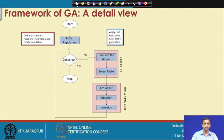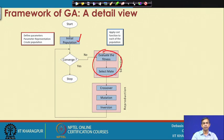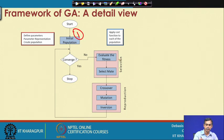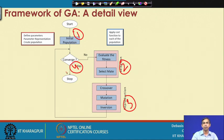In genetic algorithm, the key tasks are: how to create a new population, how to do selection by means of evaluation and mating pool generation, how to perform reproduction — that is, crossover, mutation, and inversion — and for each population how to check convergence. Learning a genetic algorithm essentially means learning these four tasks in detail. Finally, we will see how, given an optimization problem, we can solve it using genetic algorithm.